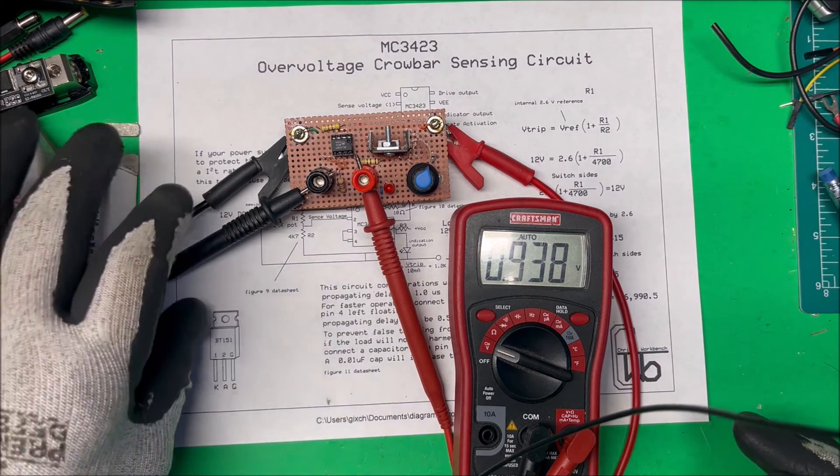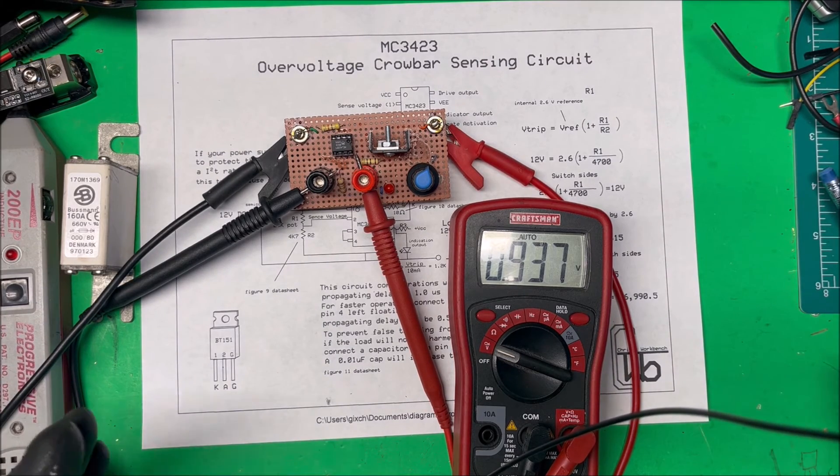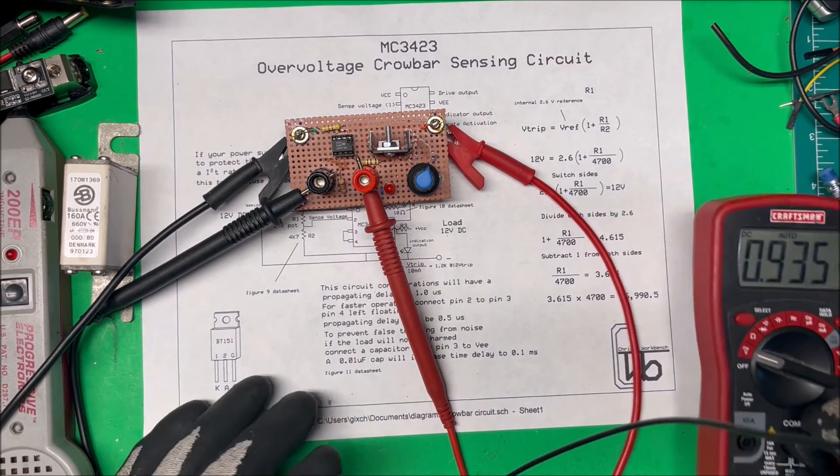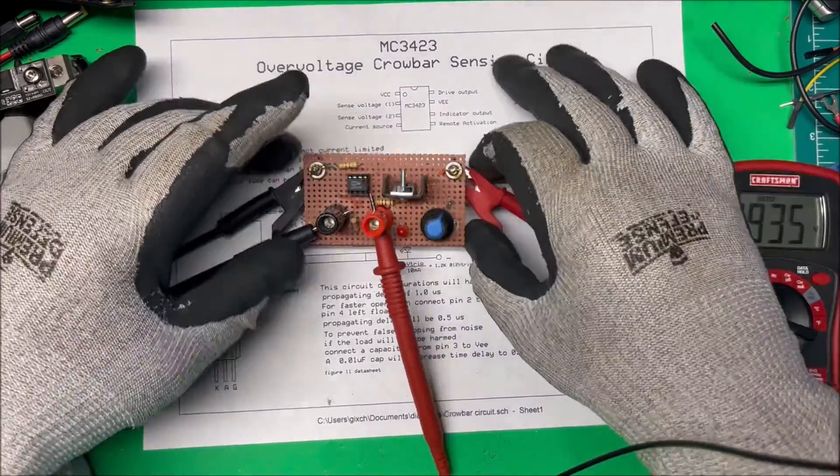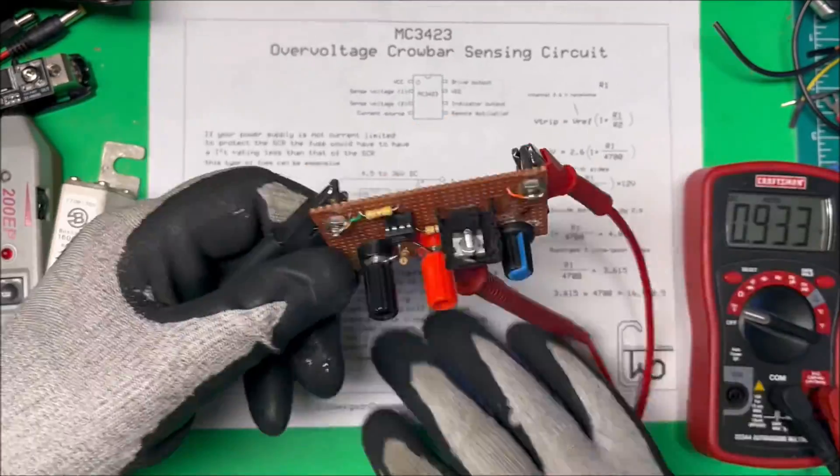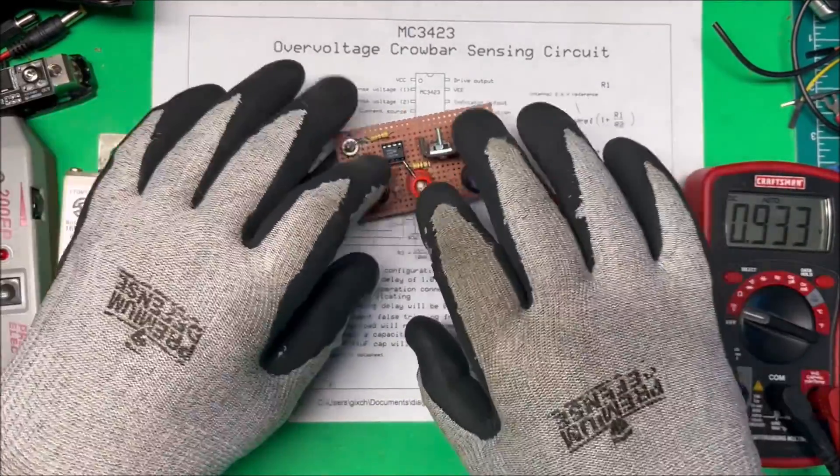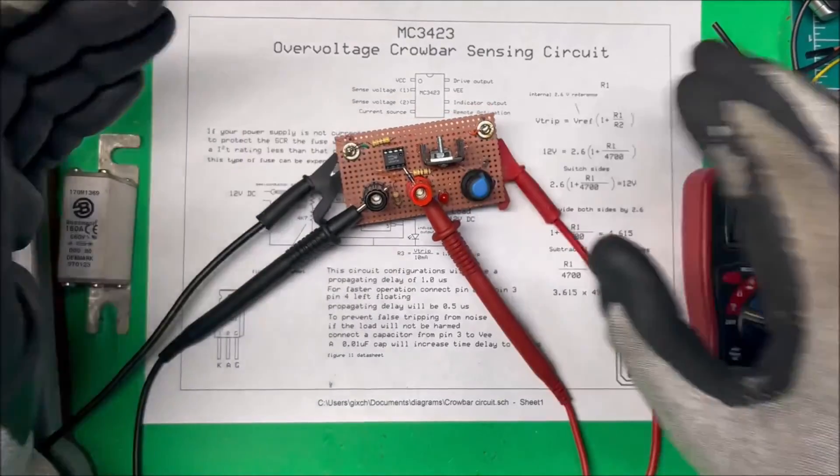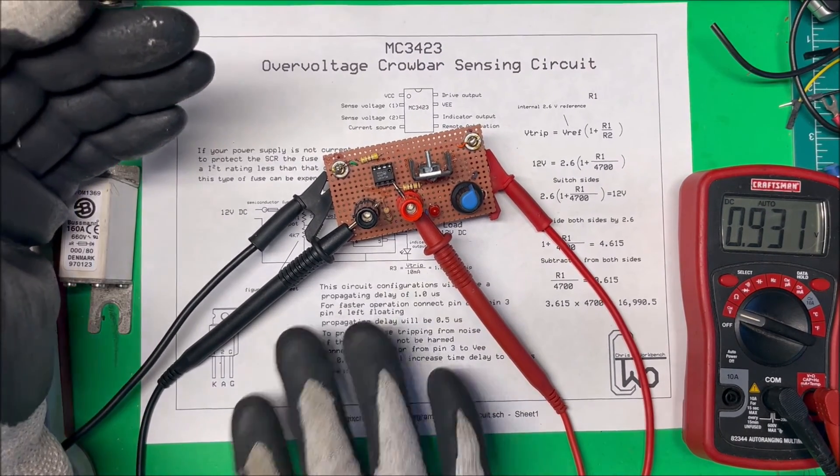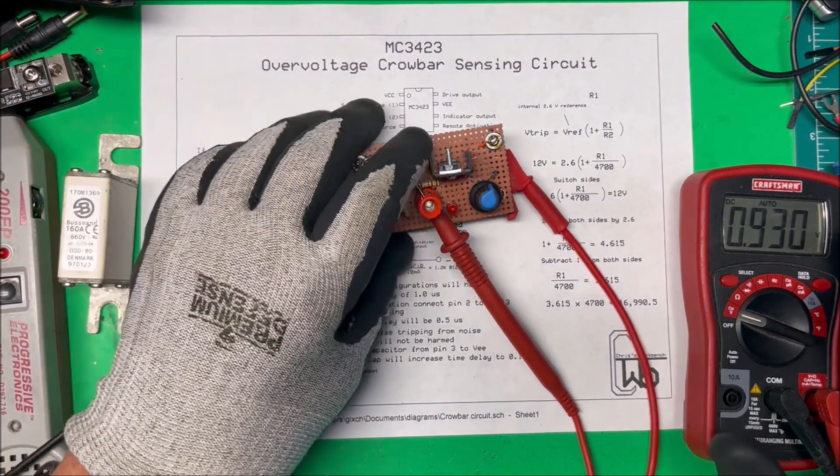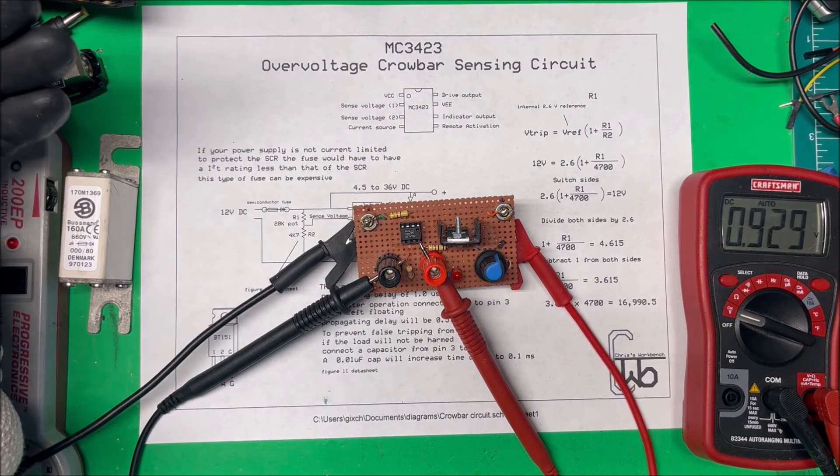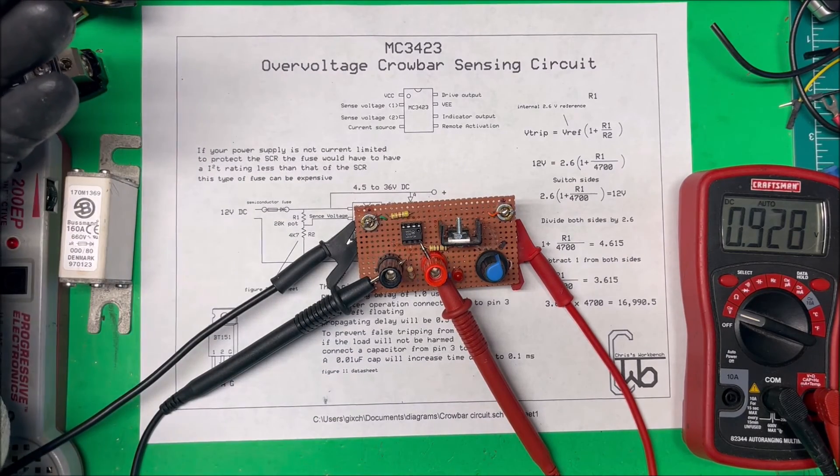By changing that voltage divider, you can adjust it down to 5 volts or all the way up to 36 volts on this one. There are other configurations you can use to get higher voltages. This particular one I have set up to plug into my power supply, so I can set this to 12 volts and no matter what the power supply's set at, I won't get over 12 volts on it. So anyway, that's an overvoltage crowbar sensing circuit—very easy to use with the MC3423. There's a little chip right there, and it works good.